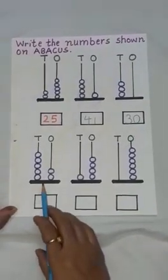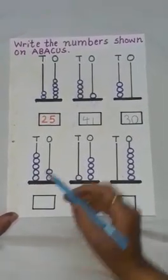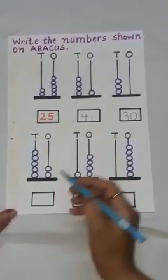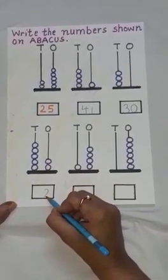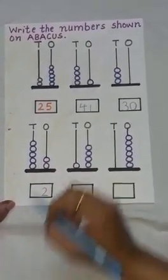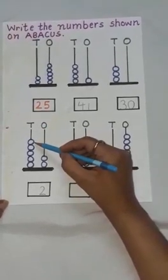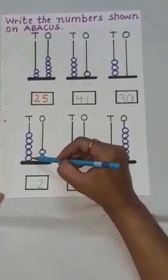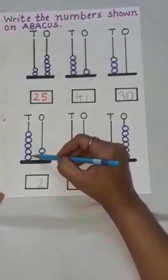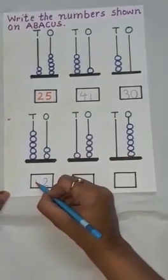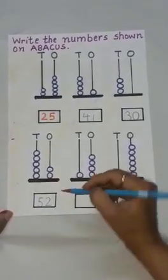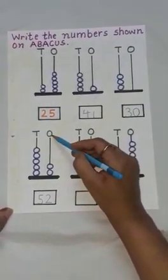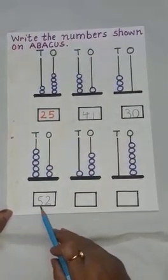Now, move to the next abacus. Count the number of beads at the ones place: 1, 2. What will we write here? 2. Now, count the number of beads at the tens place: 1, 2, 3, 4, 5. How many beads are there? 5. So, the number is 5 tens, 2 ones. Number is 52.